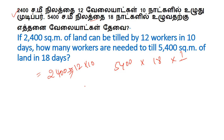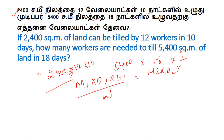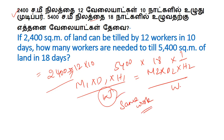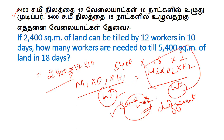The formula we know is M1, D1, H1 divided by Work1 equals M2, D2, H2 divided by Work2. This is Work 1 and Work 2.